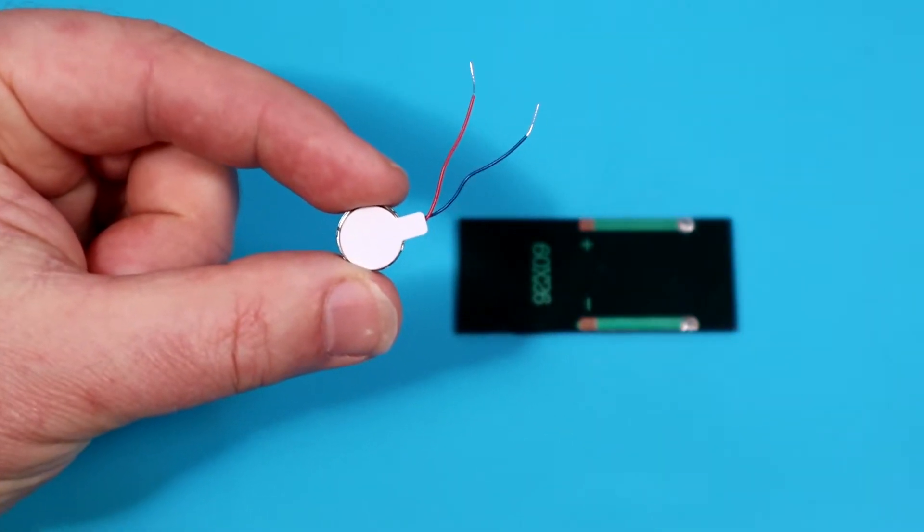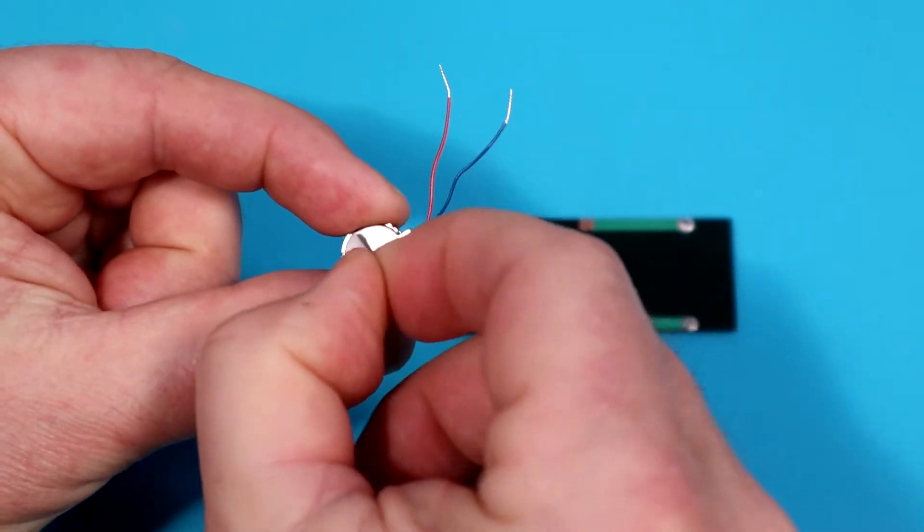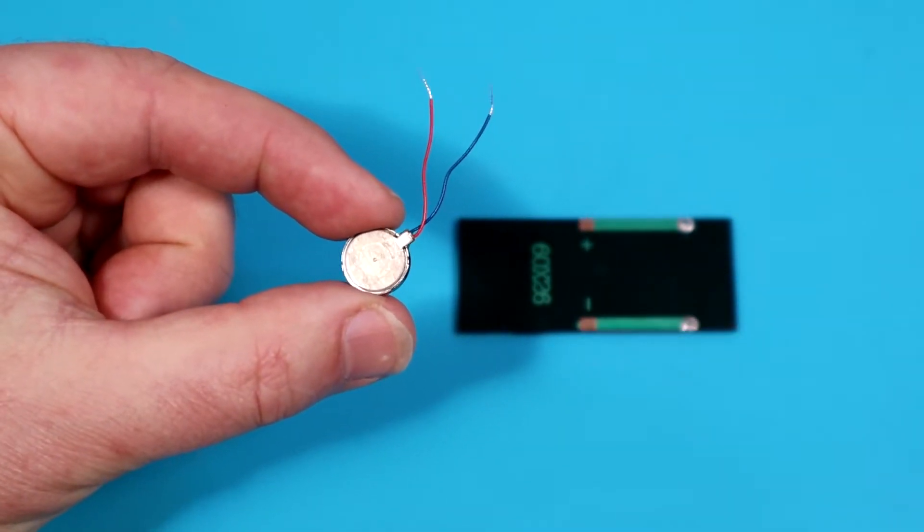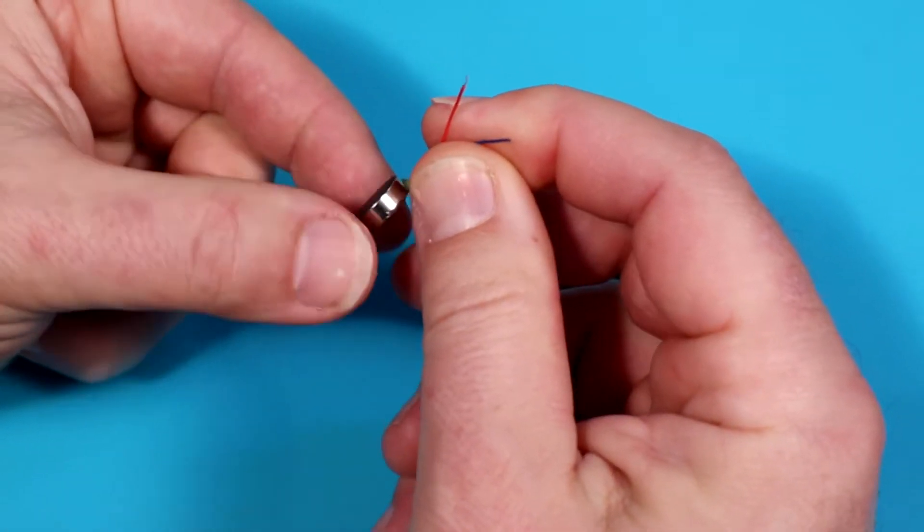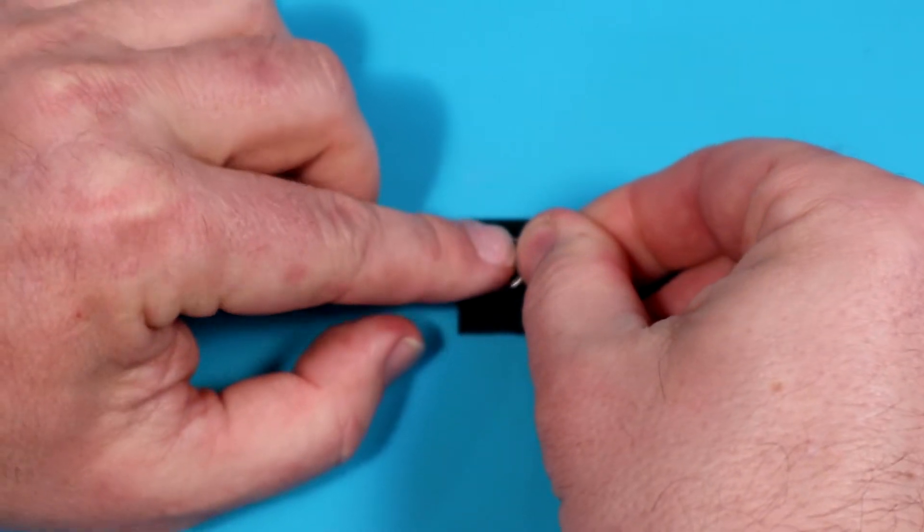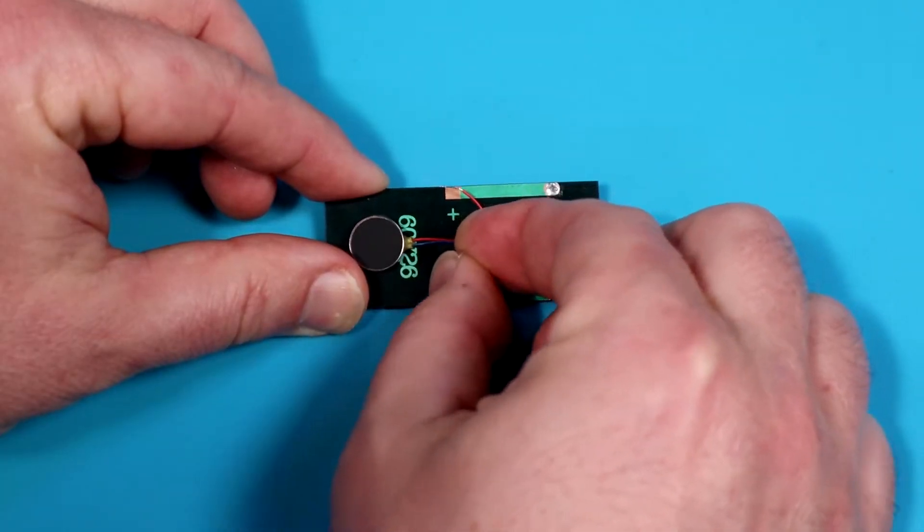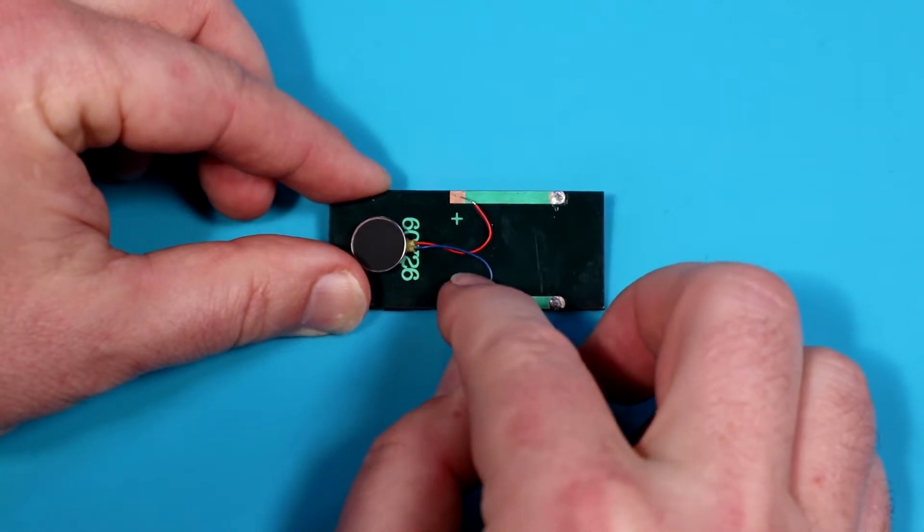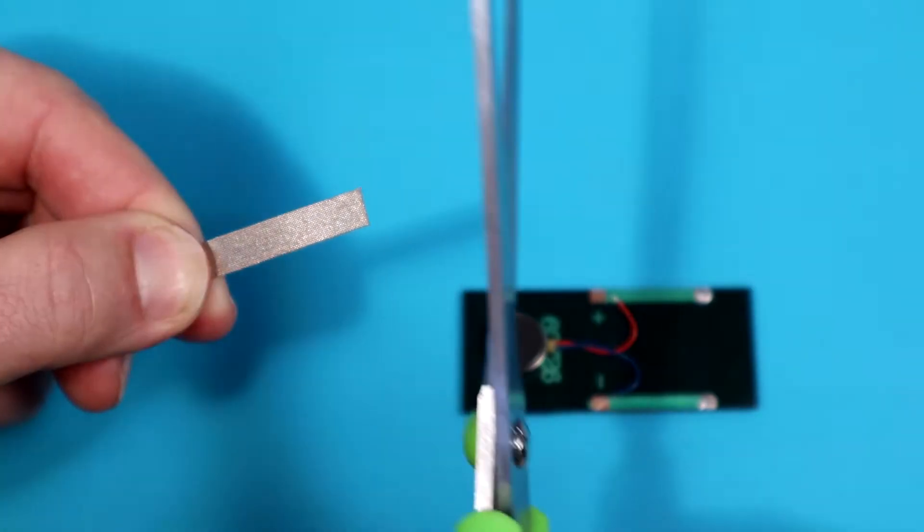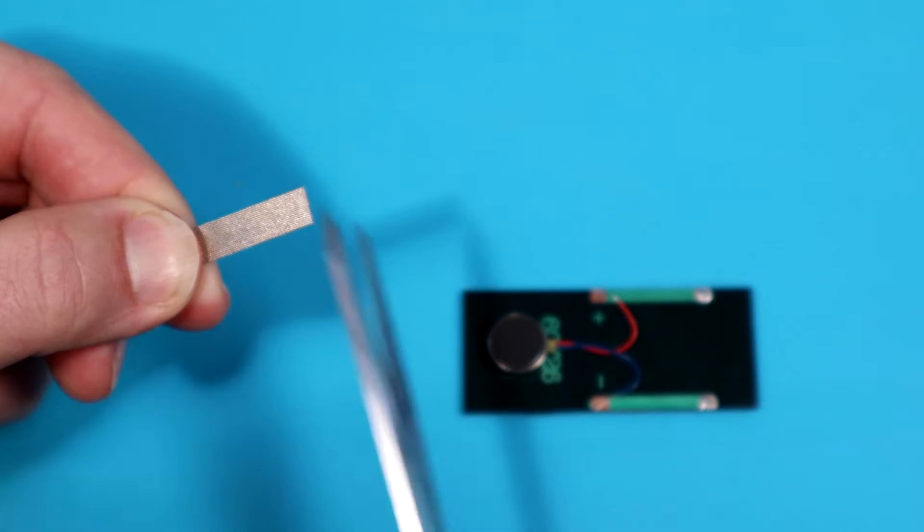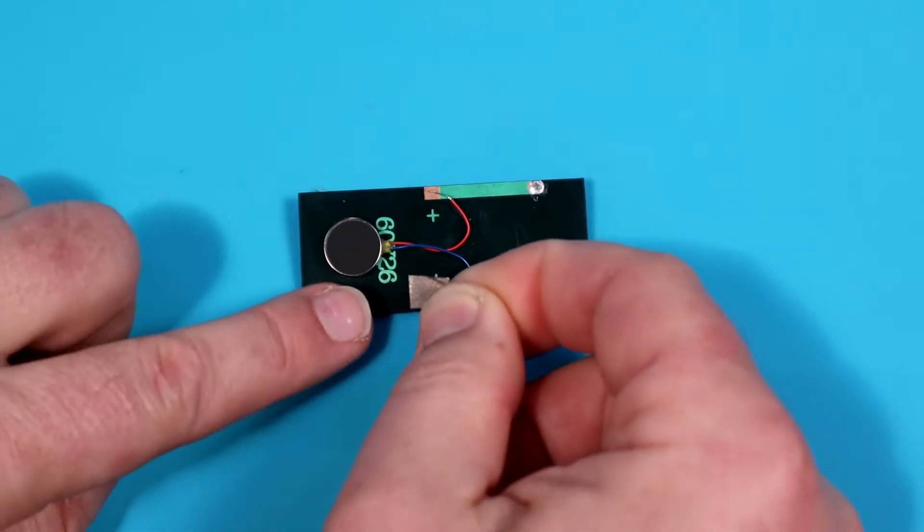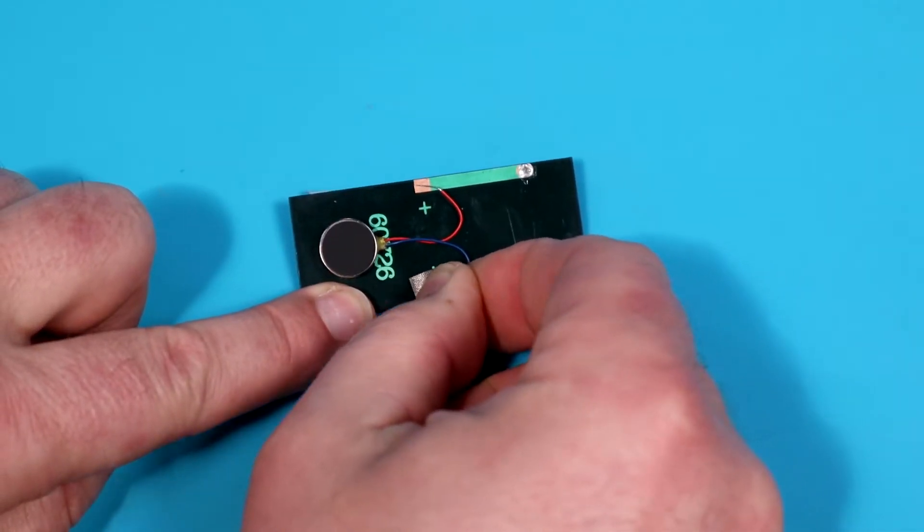Take the vibrating motor and remove the white paper backing to reveal the adhesive. Stick the motor on the solar cell so that the wires can connect with the leads. Bend the wires into an arch so they can reach the leads. Cut a small piece of maker tape and use it to stick down each of the two wires to the leads.